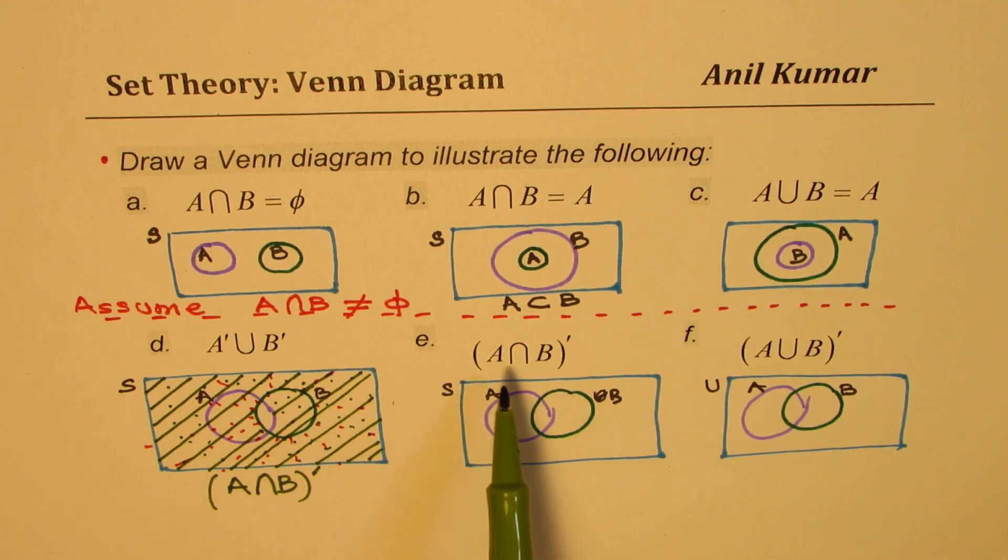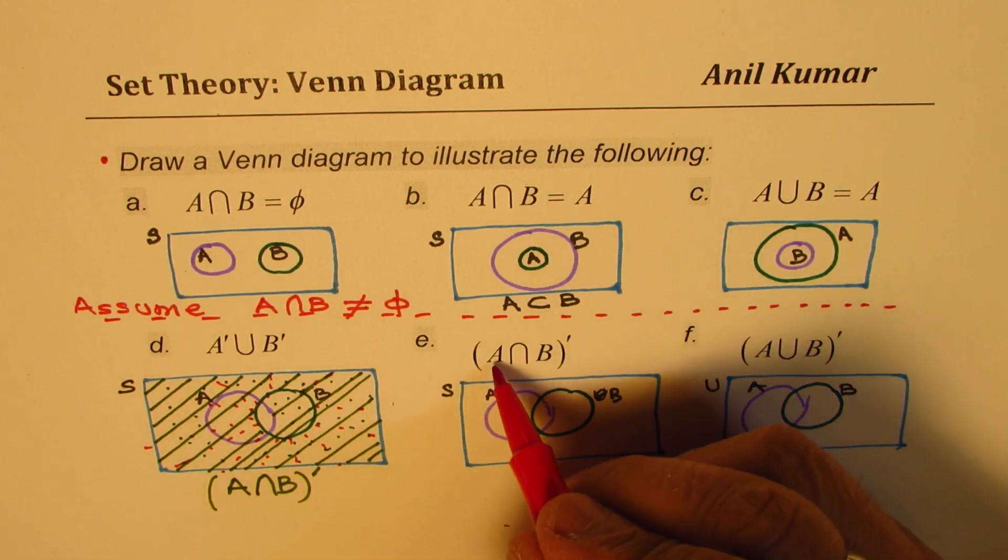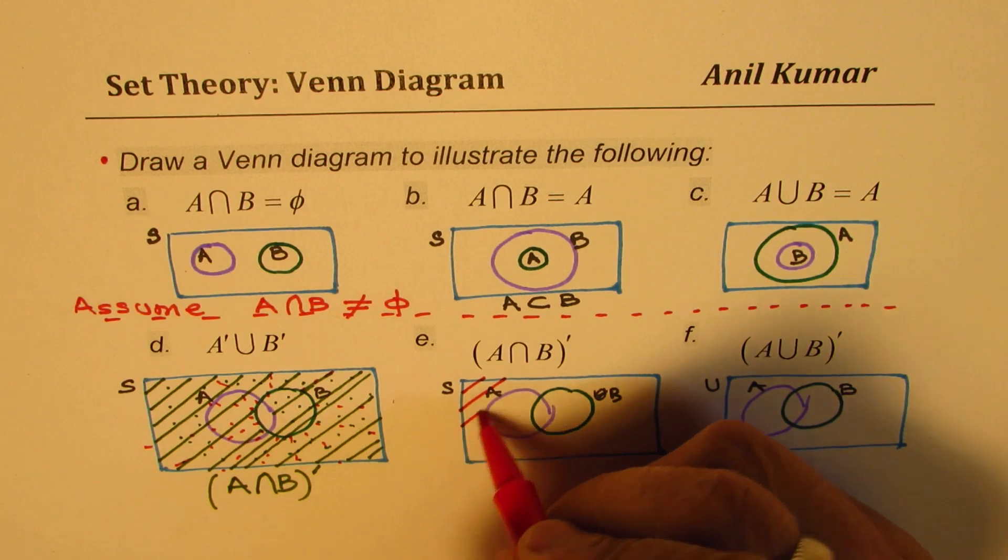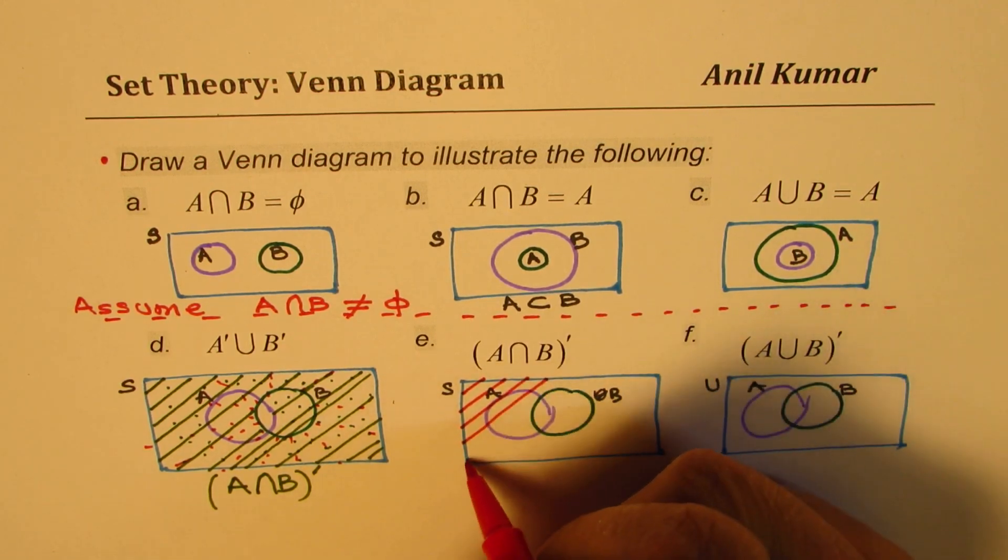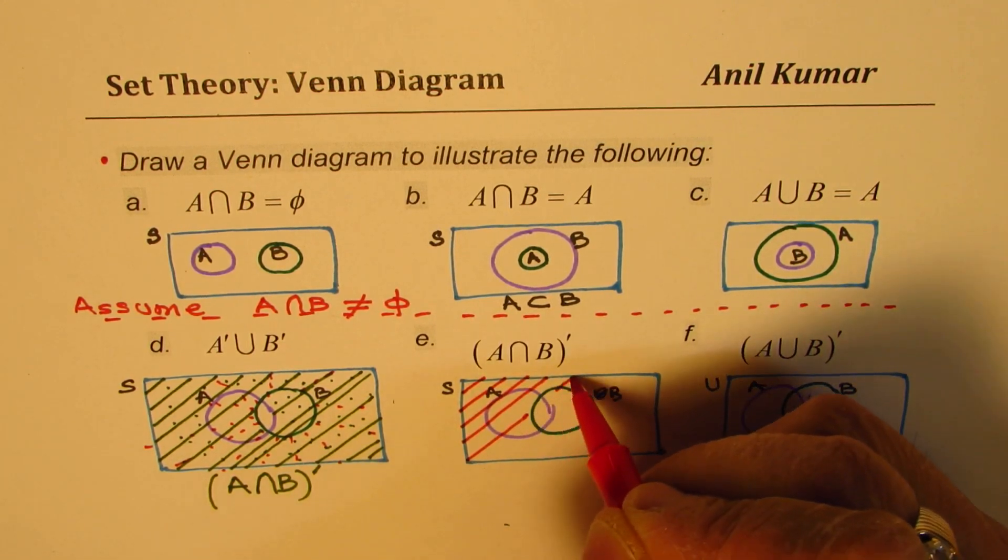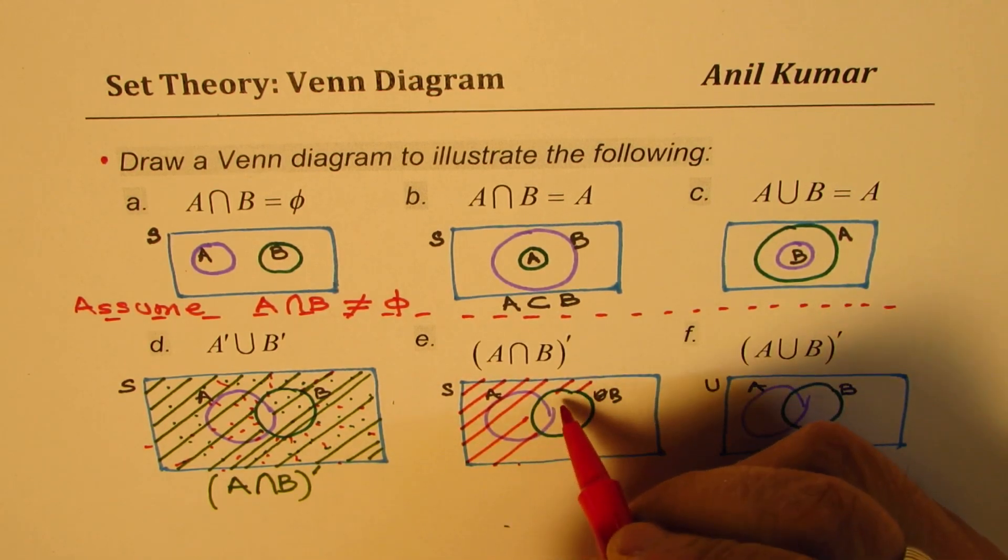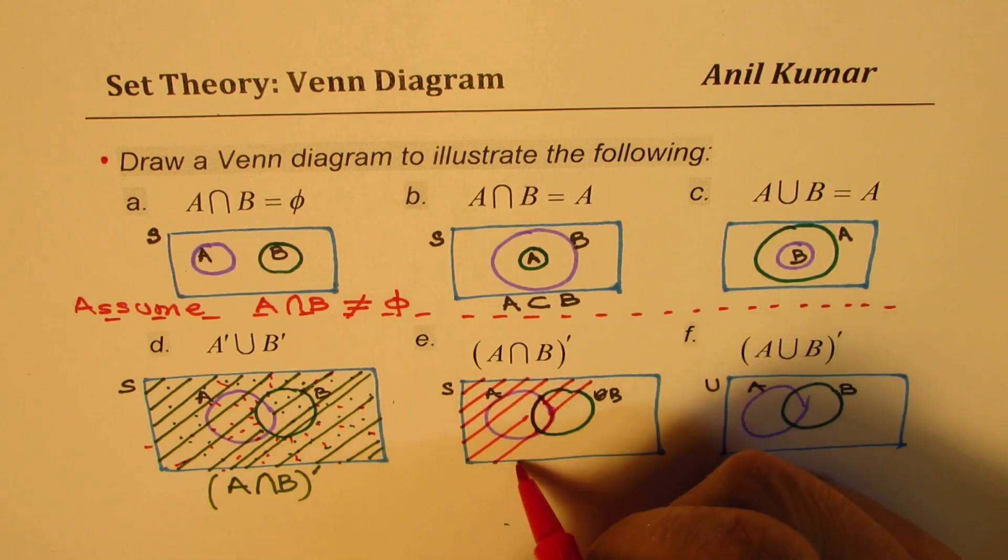The next one here is we do intersection and outside that. So means in this case the intersection of A and B is this small thing here. But we want to have a complement. So that means everything outside. Do you see that portion? Everything outside. Exactly what we did earlier. So not this not this portion. That's what we are trying to say. But everything outside. So that is what it is.